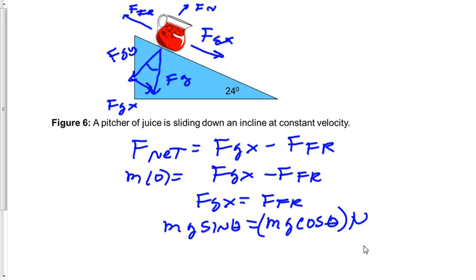Now we need to simplify the equation. I've got a mass times gravity here, a mass times gravity here, so that can cross off. So I have sine theta equals cosine theta mu. Now I'll divide both sides by the cosine of theta.